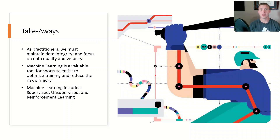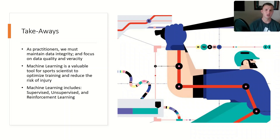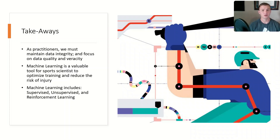Our key takeaways: as practitioners, we must maintain data integrity and focus on data quality and veracity. Machine learning is a valuable tool for sports scientists to optimize training and reduce the risk of injury, but it has to be used to streamline our jobs so we're able to spend more time with our athletes. Machine learning includes supervised, unsupervised, and reinforcement learning.